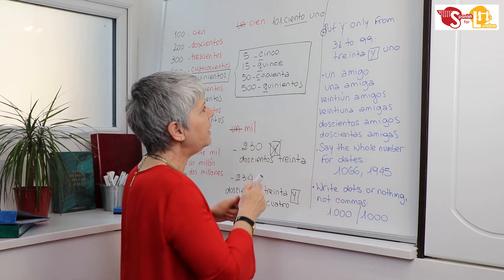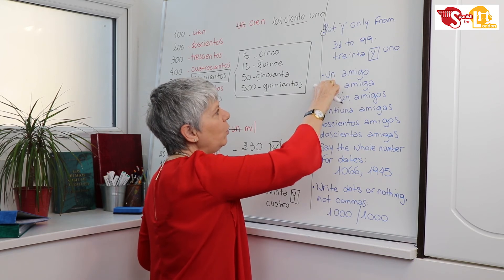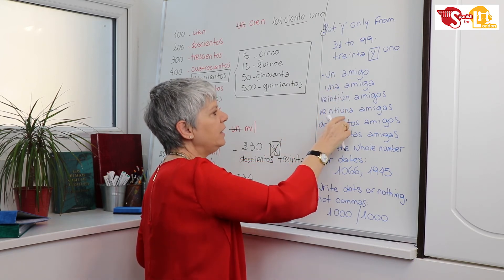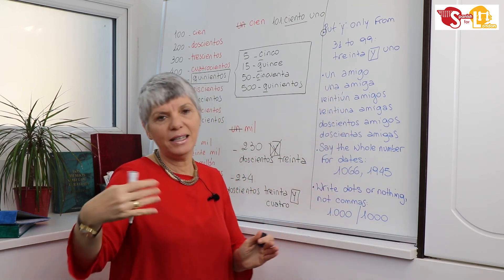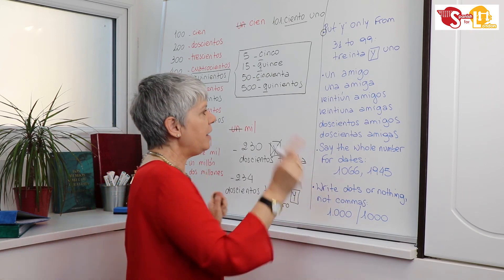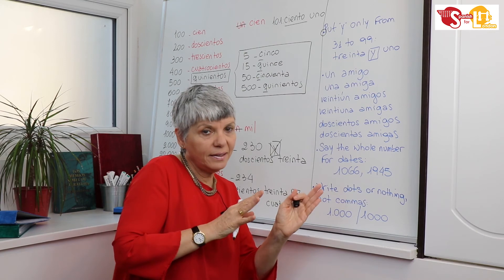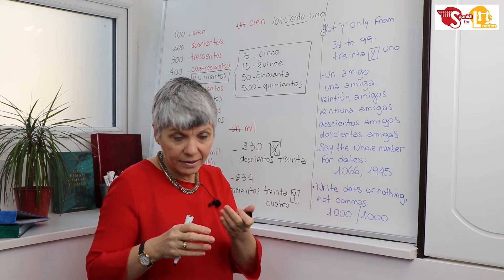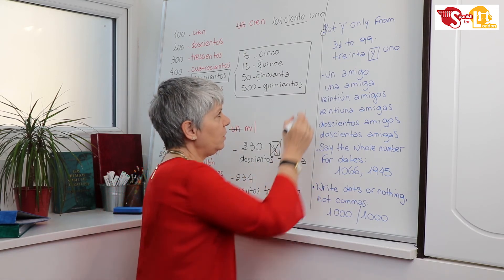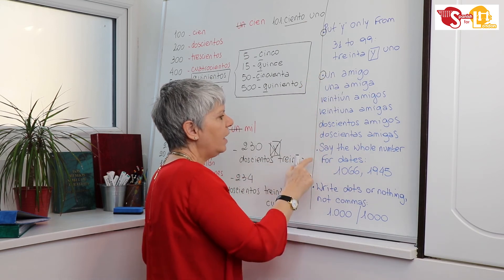Okay? So remember, numbers from one: un, una, veintiún, veintiuna, treinta y un, treinta y una, etc. And numbers from cien: doscientos, doscientas, trescientos, trescientas, etc., take feminine and masculine forms.